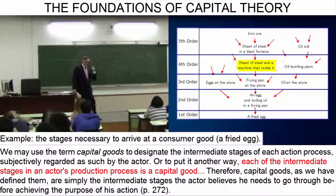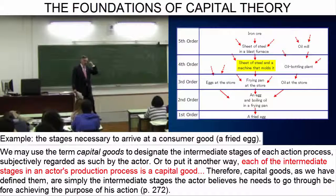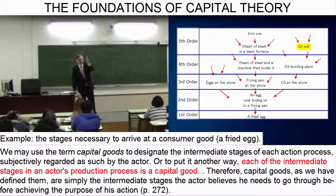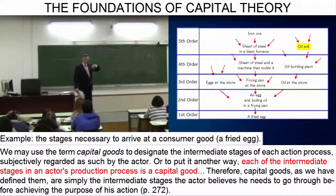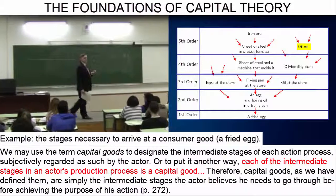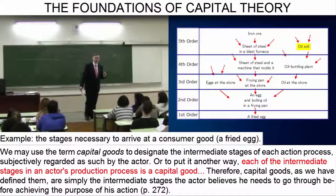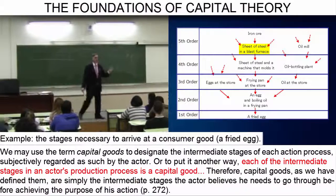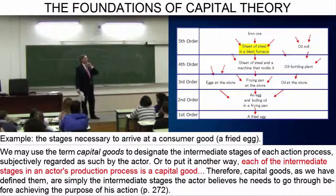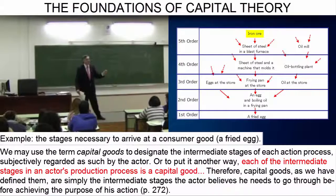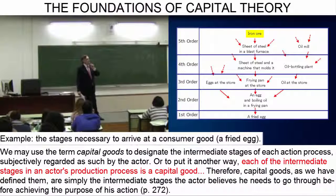But we can go further back, to the company which molds the frying pan out of a sheet of steel. And with respect to the oil, the olives must be pressed, and the oil stored at an oil mill. But we can go further back, to the blast furnace where the sheet of steel is made.